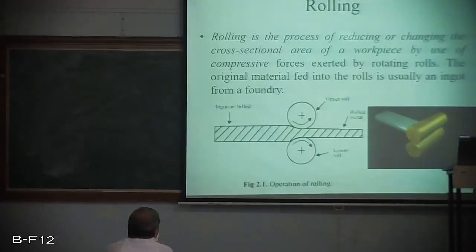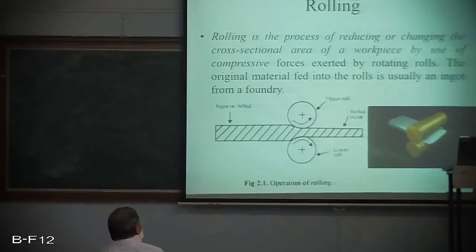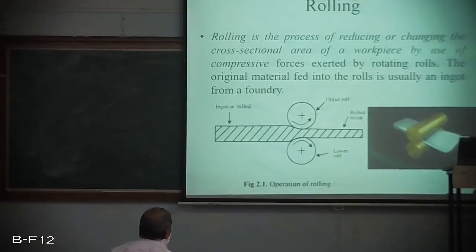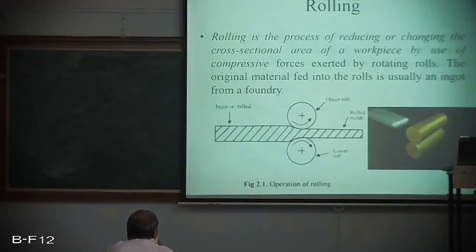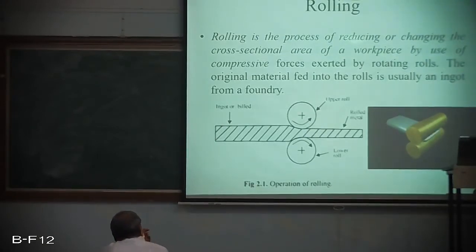In operation, as the workpiece passes between the two constantly rotating rolls, it is subjected to high compressive force from the squeezing action. In addition, the workpiece is also subjected to surface shear stresses as a result of friction between the rolls and the work piece metal. As a result, the workpiece is plastically deformed to the desired shape. Flat products are produced by cylindrical shaped rolls, while profiles are produced by grooved or shaped rolls.